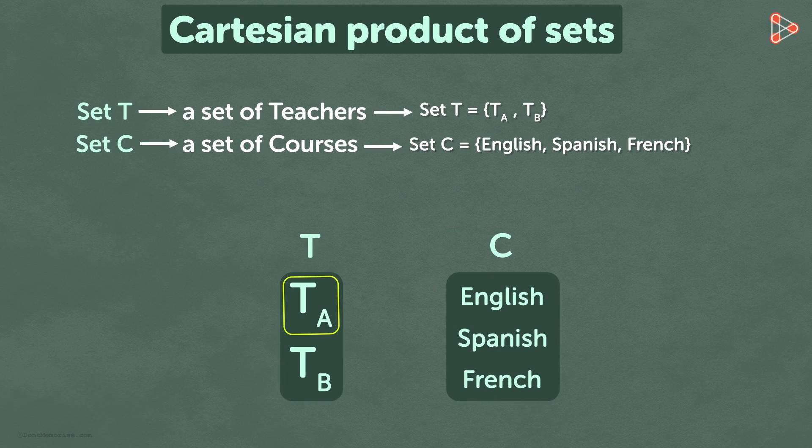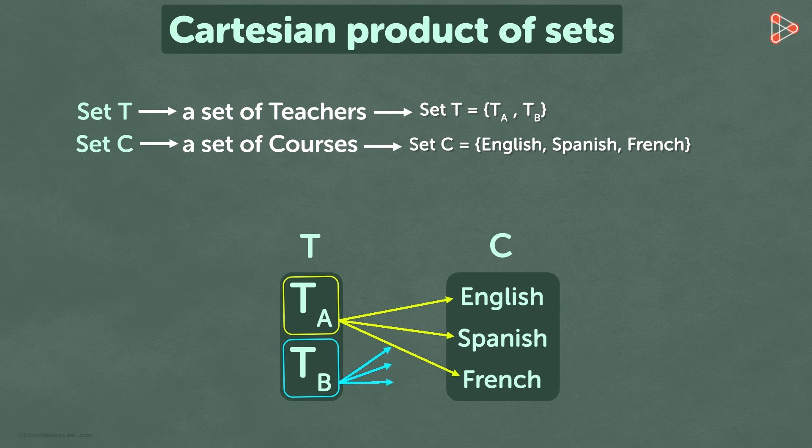Teacher A can teach English, Spanish, and French. So we draw three arrows from TA to English, Spanish, and French. Teacher B also teaches English, Spanish, and French. Similarly, we draw three arrows from TB.